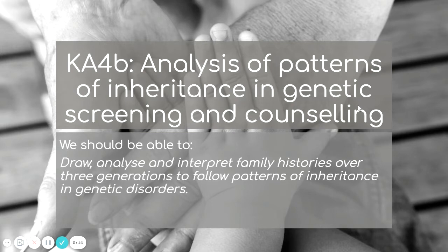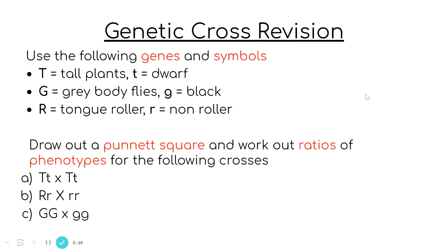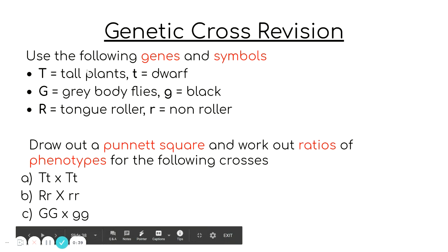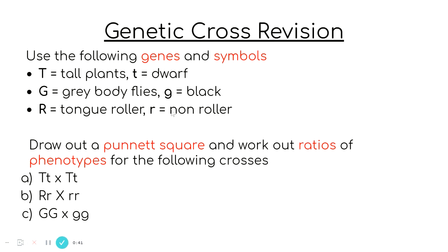There are a number of things that we should be able to do. This includes drawing, analysing and interpreting family histories over three generations to follow patterns of inheritance and various types of genetic disorders. Before you continue, it's worth going back to National 5 level genetic crosses and practising drawing out Punnett squares to look at phenotypic ratios for different crosses.